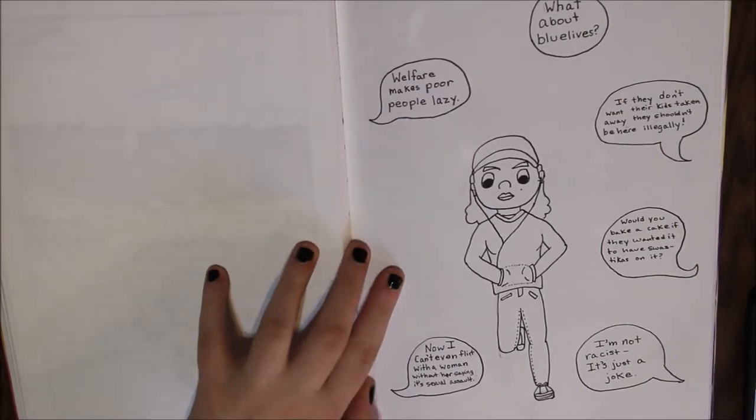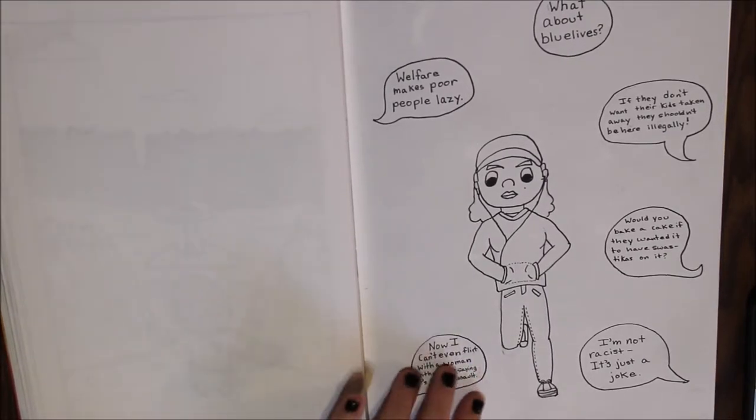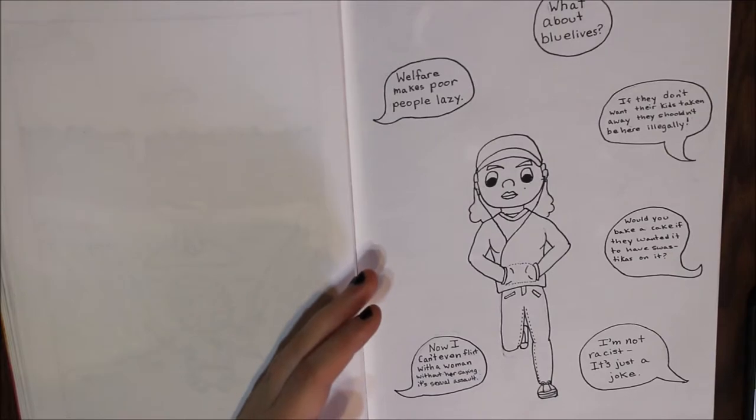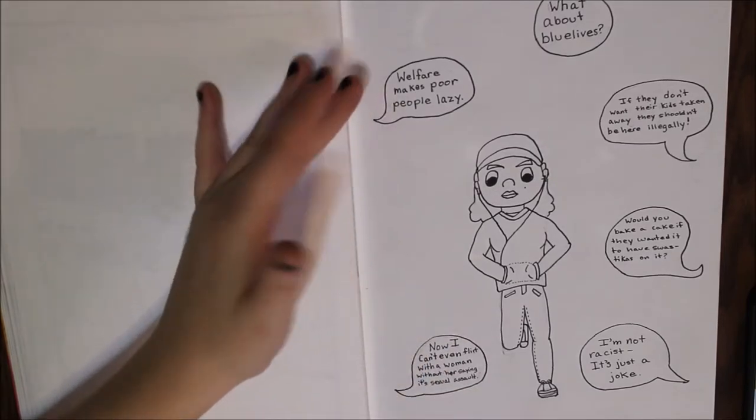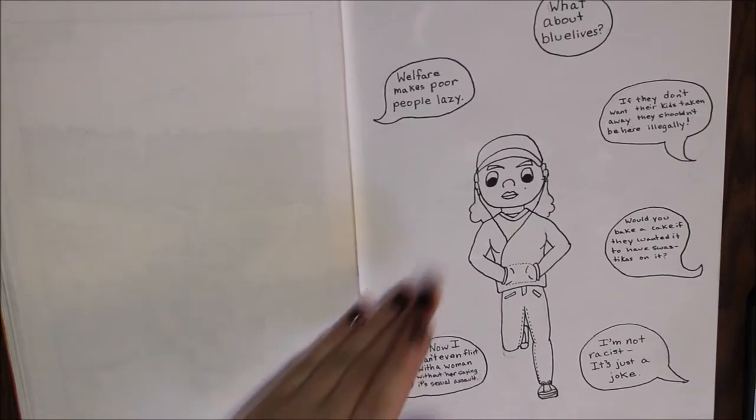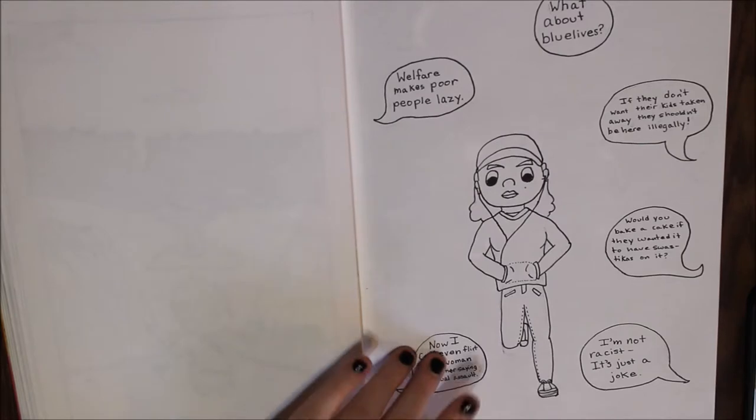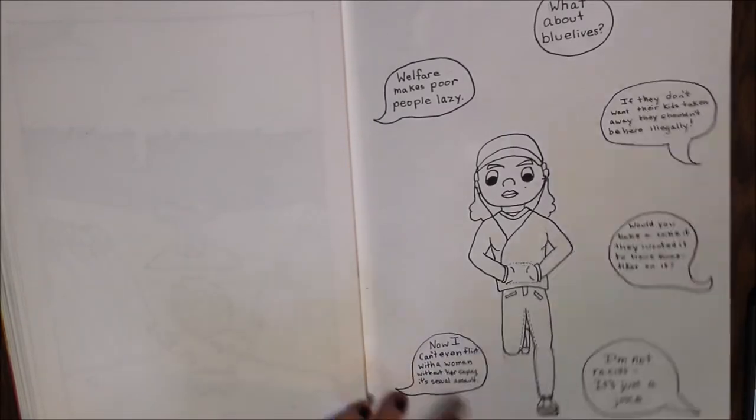Day 15 was weak. This is more of a simplistic political cartoon style. This was the first real divergence I did. The idea is that if you can stand up for people and you don't, you are weak. You can see all these things being said about people. Welfare makes poor people lazy. I'm not racist, it's just a joke. This person has their blinders on, they have their headphones in, and they're ignoring all these things that they could be saying, Hey, stop. That is racist.